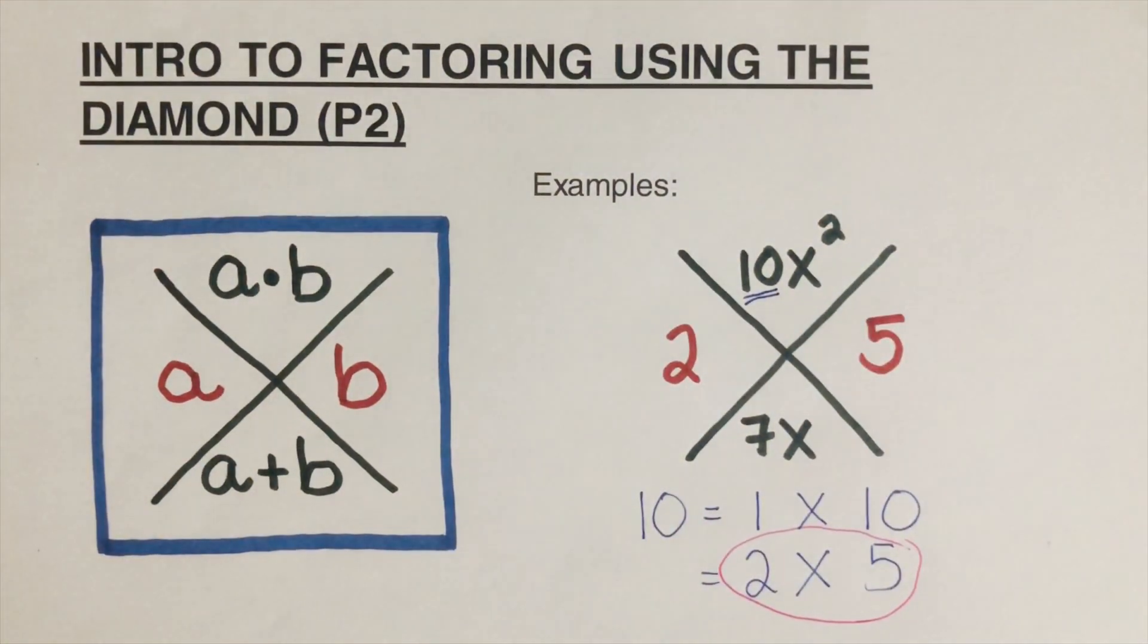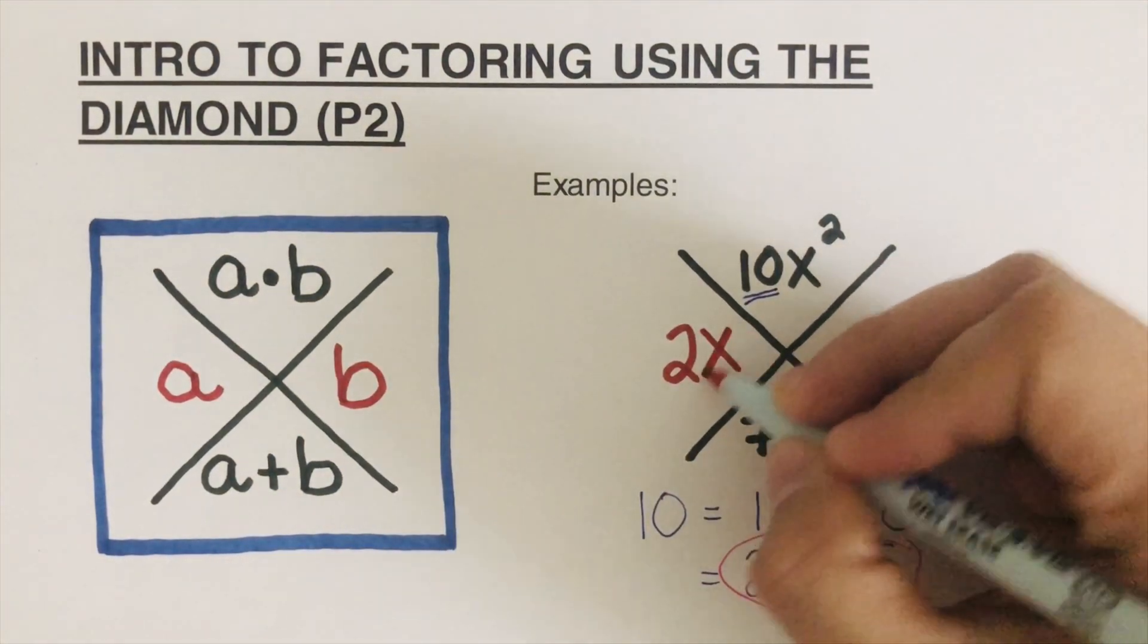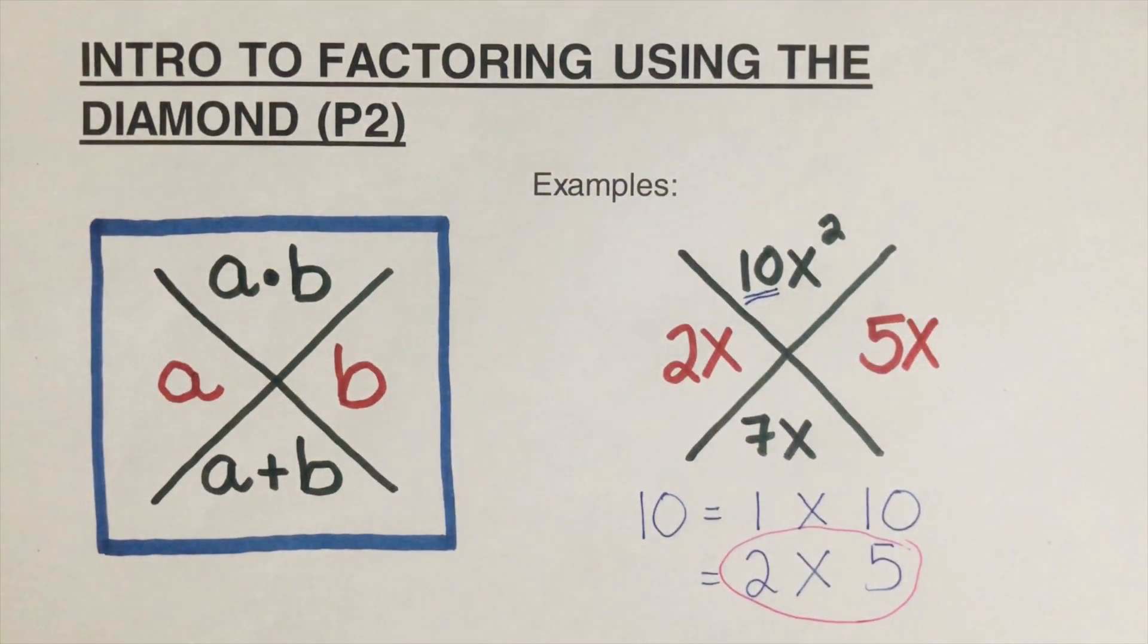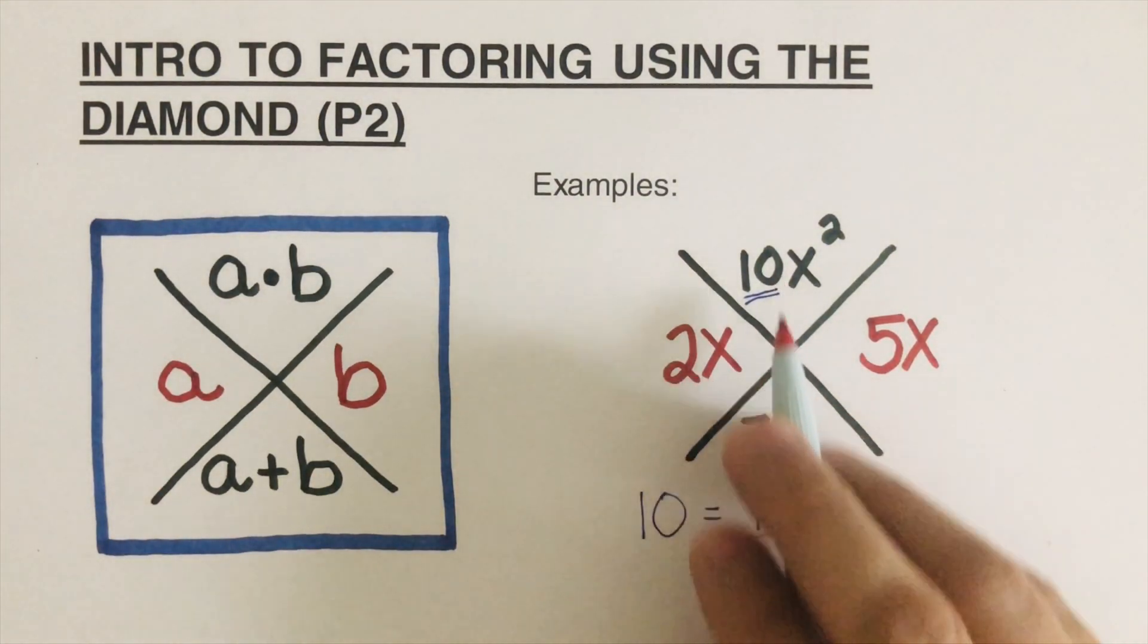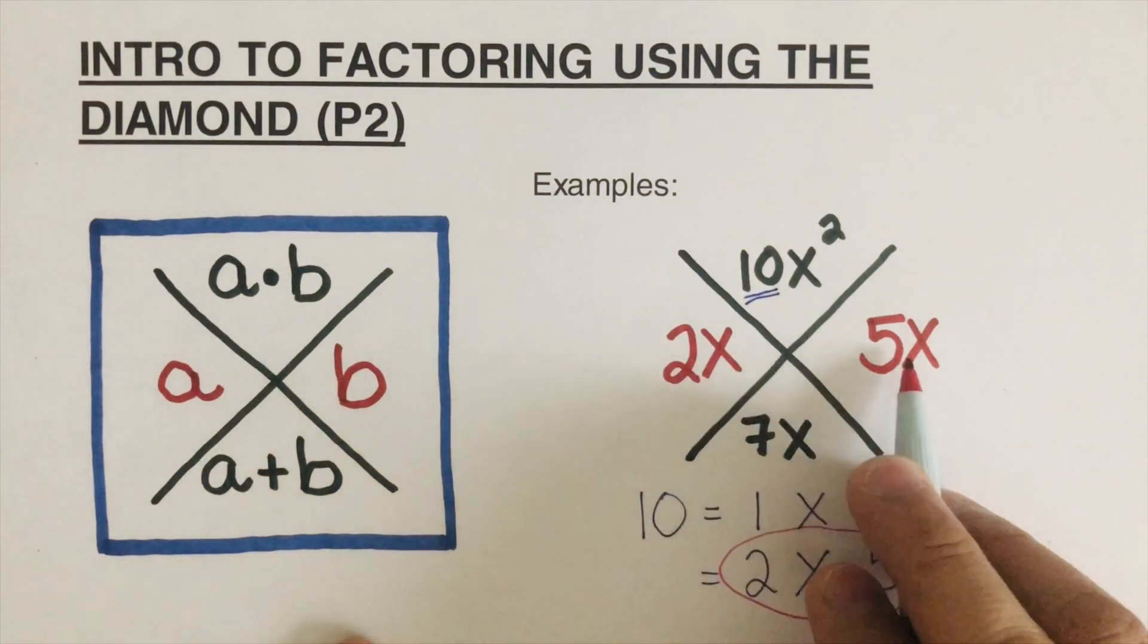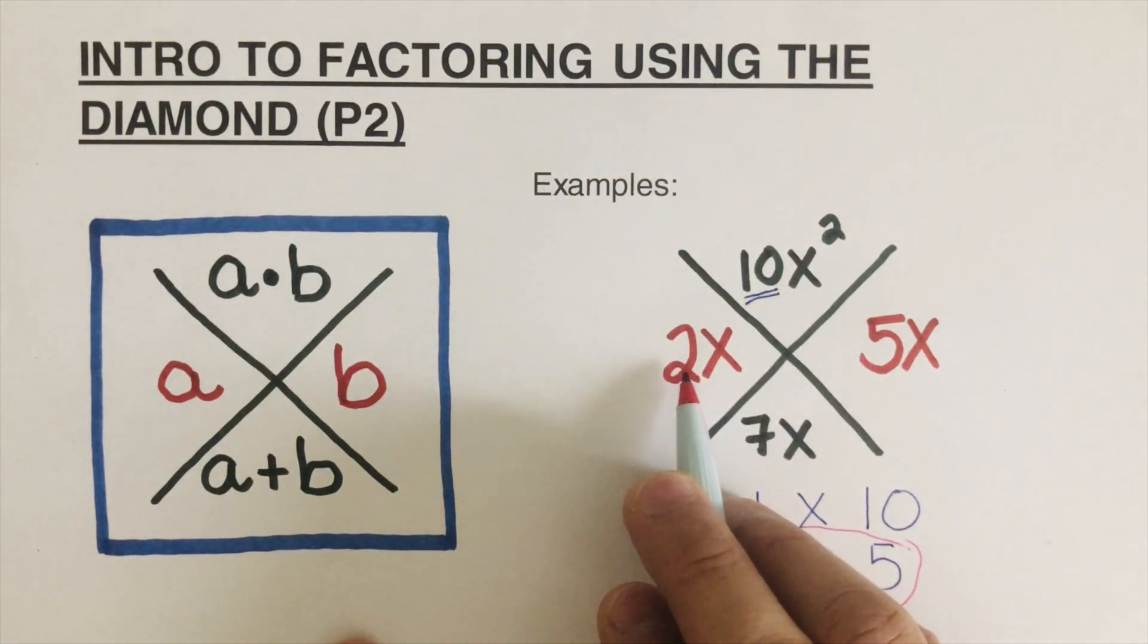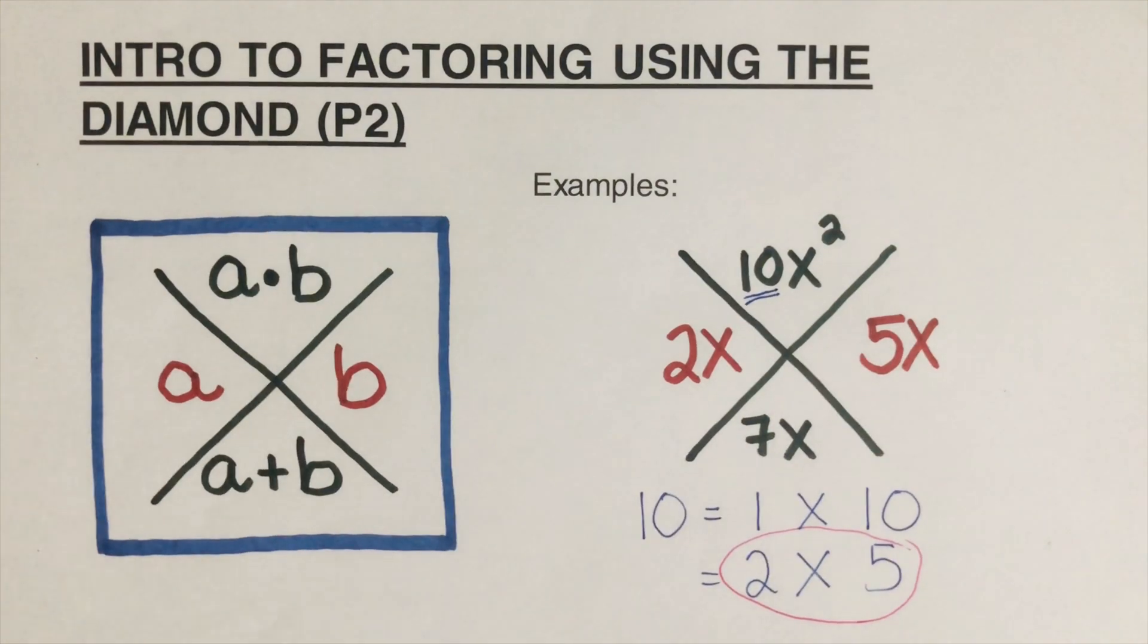So let's be sure that there is an x. So we're now putting the variable x in there. Now we are going to figure out which one's negative and which one's positive. Since both of them are positive, if we multiply this, that is positive 10x squared. If we add this, that's 7x. So it makes sense.